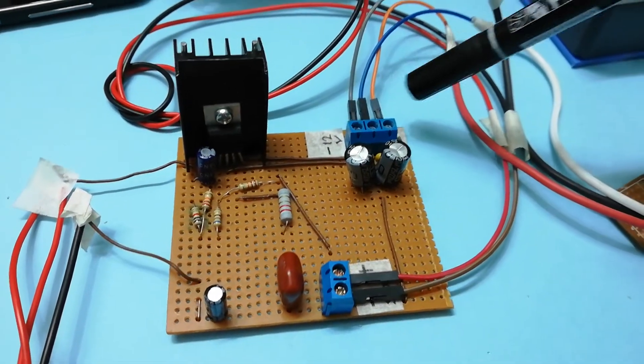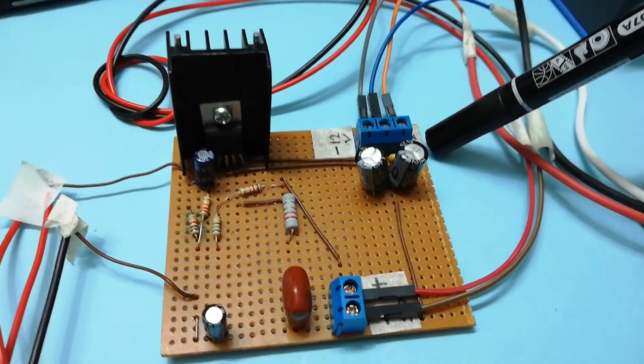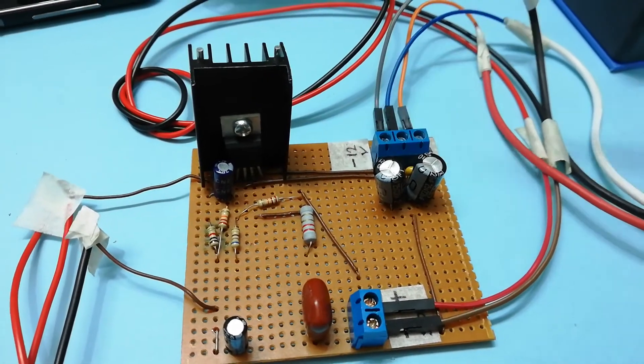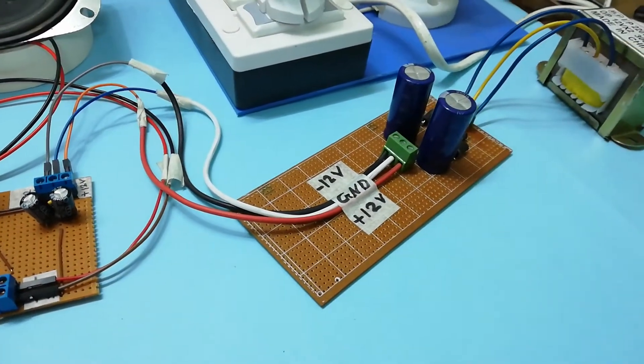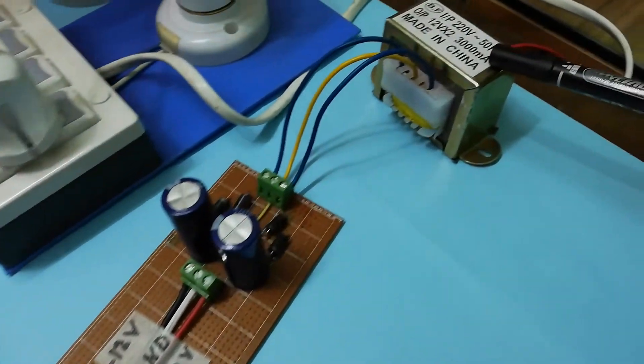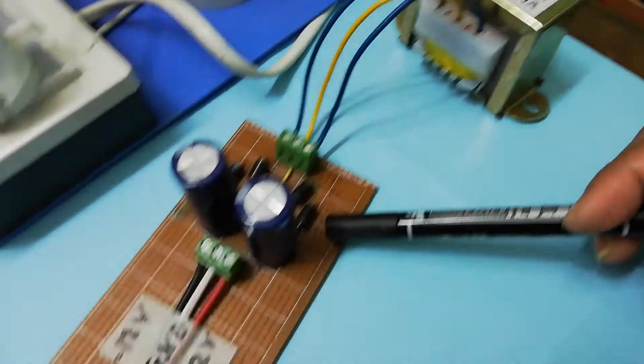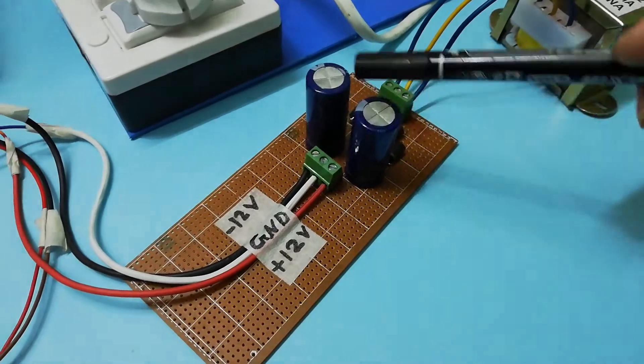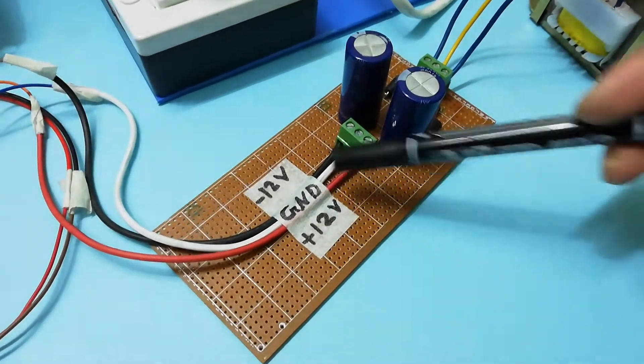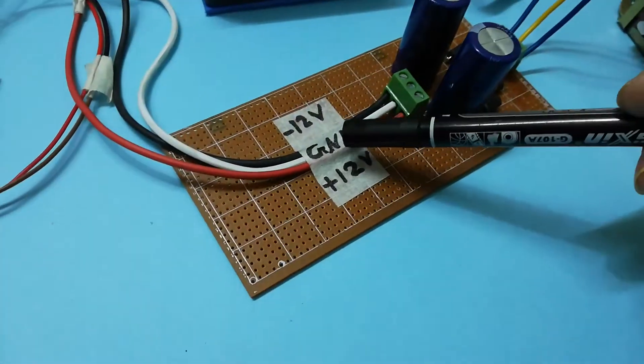And this is a split mode power supply. This is plus 12 volt, this is minus 12 volt, and this is ground. I'm getting this supply from this power supply, which is a 12 volt 3 ampere transformer with a bridge rectifier and filter capacitor. Here I'm getting plus 12 volt, minus 12 volt, and ground.